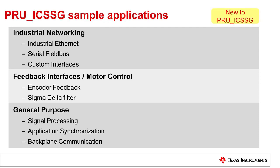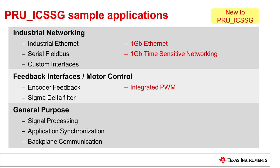The new hardware features on the PRU-ICSS-G allow for a number of new applications. Within the area of industrial networking, we can now achieve gigabit speeds. In the area of feedback interfaces and motor control, the PRU-ICSS-G now integrates a hardware PWM. Additionally, in the area of general purpose applications, we can now do preemptible software execution using the task manager that was previously mentioned. One thing that is important to note is that this is not an exhaustive list of the type of applications you can do on the PRU-ICSS or PRU-ICSS-G.